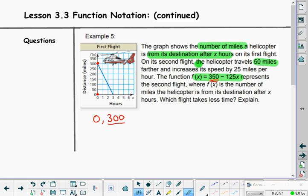This represents the second flight, where f of x is the number of miles a helicopter is from its destination. Which flight takes less time? So, I can see, can you read the chart here and see how long it took to get to its destination? How long did it take it to travel those 300 miles? Three hours. At three hours time, it was zero miles away from its destination. So, three hours, zero miles away versus zero hours and 300 miles away. That was flight one. Basically, it took us three hours on flight one.